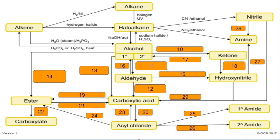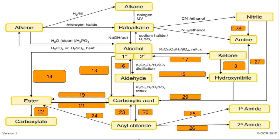Number ten: secondary alcohol to ketone — acidified potassium dichromate, where the acid is sulfuric acid, and you would reflux that. Number eleven: primary alcohol to aldehyde — same oxidising agent, but to get the aldehyde you need to do it under distillation. Number twelve: aldehyde to carboxylic acid — same oxidising agent and you would generally heat that under reflux. Number thirteen: primary alcohol to carboxylic acid — same oxidising agent, but to get the carboxylic acid you'd heat under reflux.